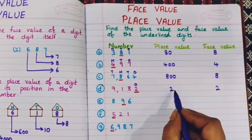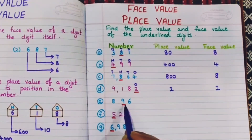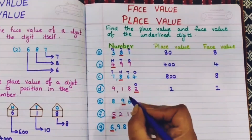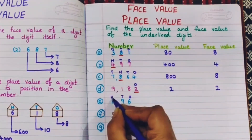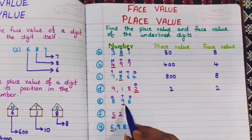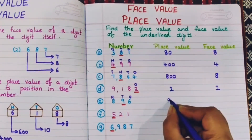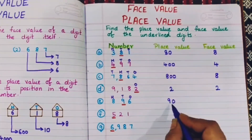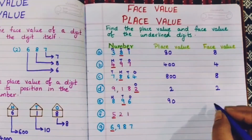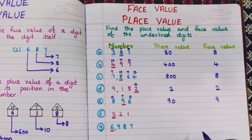Next, 896. Positions: ones, tens, hundreds. 9 is in the tens position, so the place value is 90 and the face value of 9 is 9 itself.